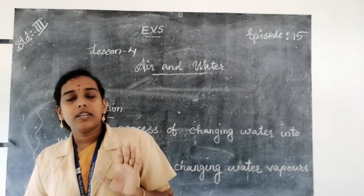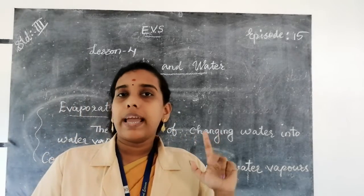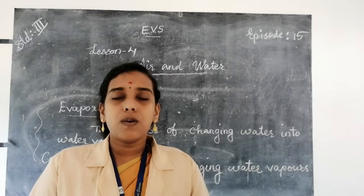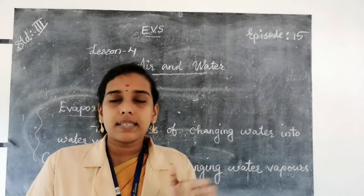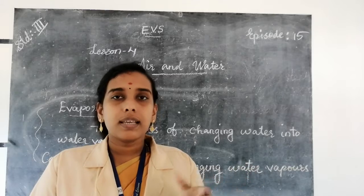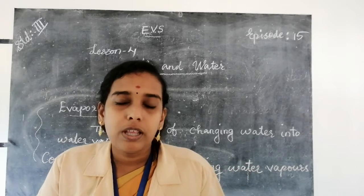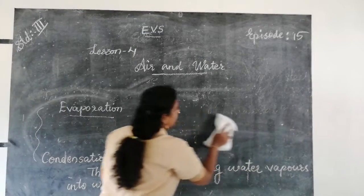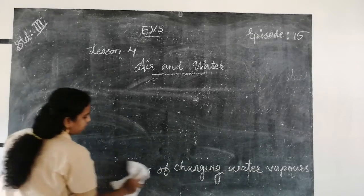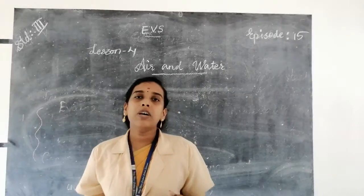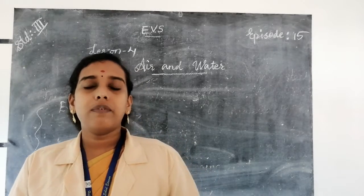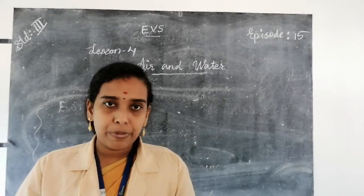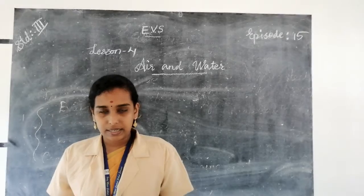So what are the three states of water? Ice, water, and water vapor. Which is the solid state of water? Ice. Which is the gaseous state of water? Water vapor is the gaseous state of water. What do you mean by evaporation? The process of changing water into water vapor is called evaporation. The process of changing water vapor into water is called condensation.